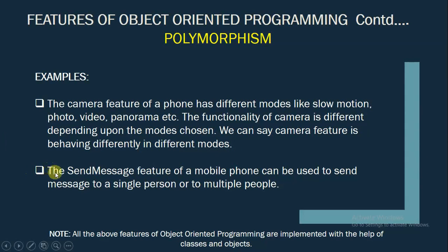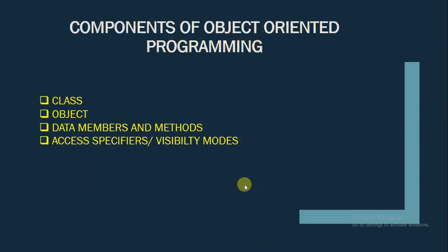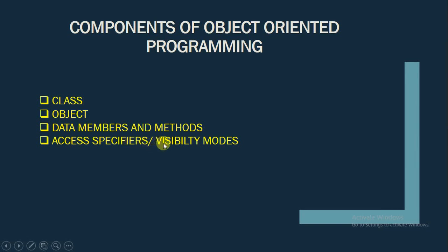Similarly, we can take the example of the send message feature of a mobile phone. You can use this feature to send messages to a single person or to multiple people. Now let us understand the components of object-oriented programming. The basic components of object-oriented programming are class, object, data members and methods, and access specifiers or visibility modes.